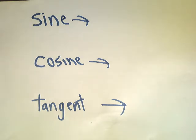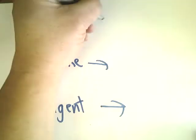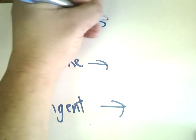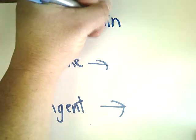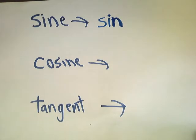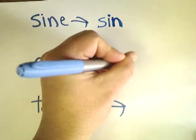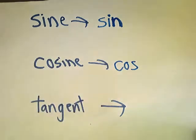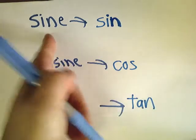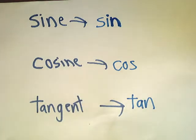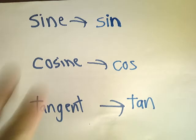Sine, cosine, and tangent — really not that complicated. I'm going to show you the short versions. Sine is abbreviated as sin. Cosine is cos. And tangent is tan — those are the abbreviations. Why you would abbreviate a four-letter word is beyond me. I think they just wanted them all to be the same length.